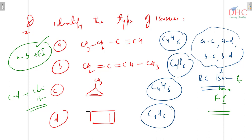To summarize: C and D are chain isomers; A and B are functional isomers; A with C, A with D, B with C, B with D are ring chain isomers — and ring chain isomers are also functional isomers. This is how you identify ring chain and functional isomers. I hope you understand functional isomerism now.